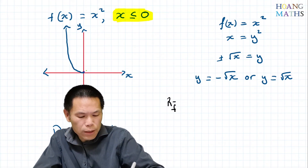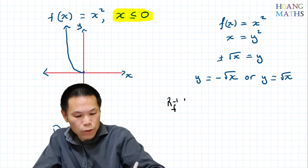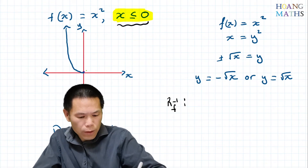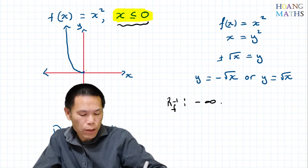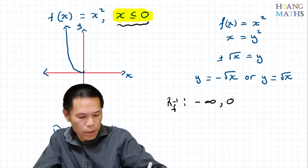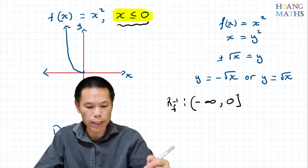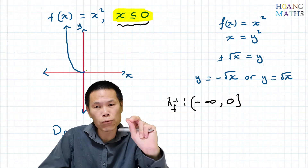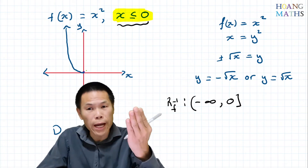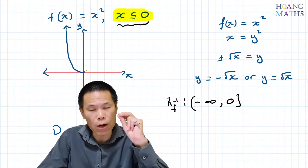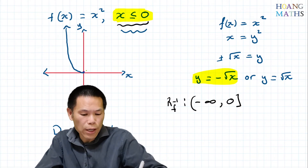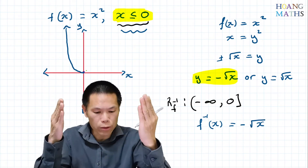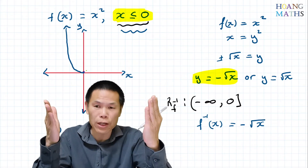The range of the inverse equals the domain of the function, which is x less than or equal to zero, so the range is y less than or equal to zero — written as (−∞, 0]. Therefore we need y values of the inverse to always be negative or zero, so we pick the negative square root answer.